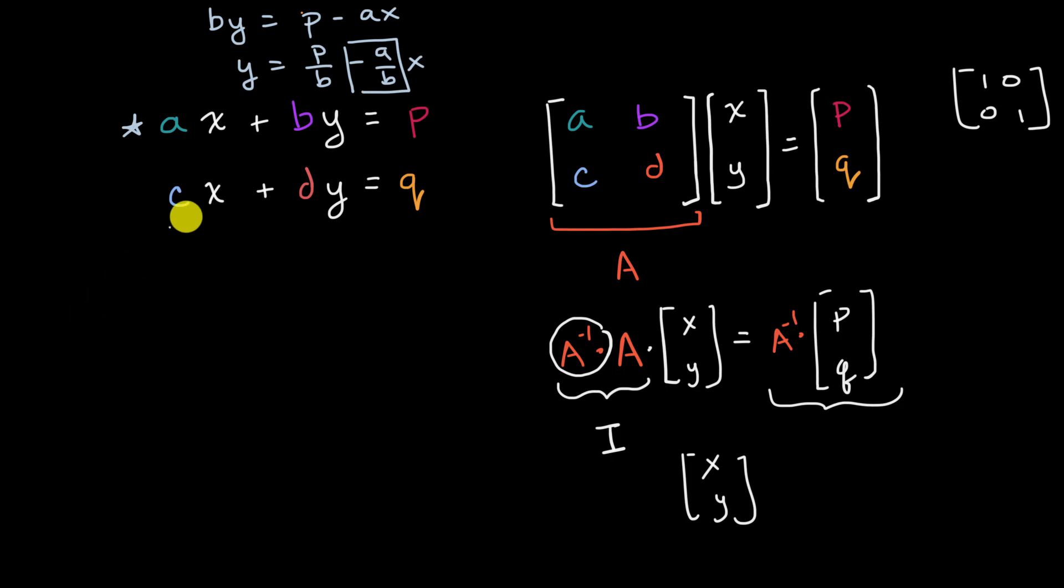Now, what about the second equation? Well, by the same logic, if you do the same thing, you subtract cx from both sides and then divide by d, you're going to get y is equal to q over d minus c over d x. And so we see the slope here is negative c over d.